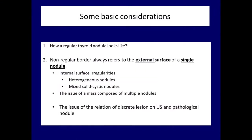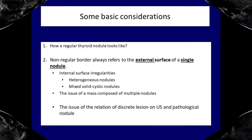The third basic feature to fulfill the criteria of irregular border: margins are interpreted in the context of pathological nodules and not in the context of discrete echo abnormalities of Hashimoto's thyroiditis. This distinction leads to one of the most difficult issues in thyroidology, which will be discussed in a separate lecture.